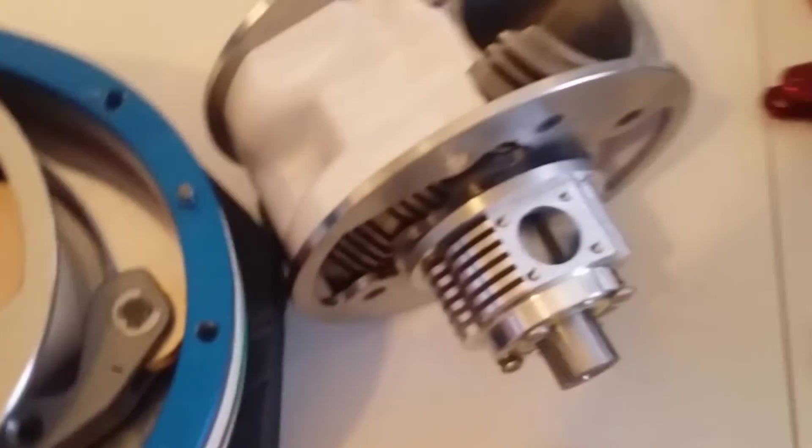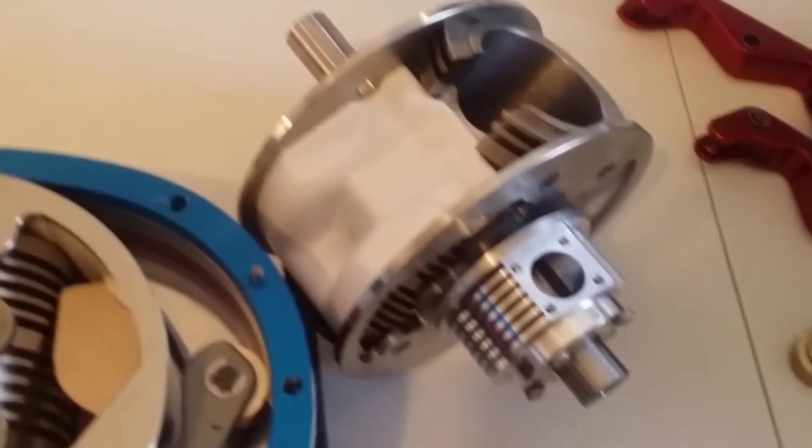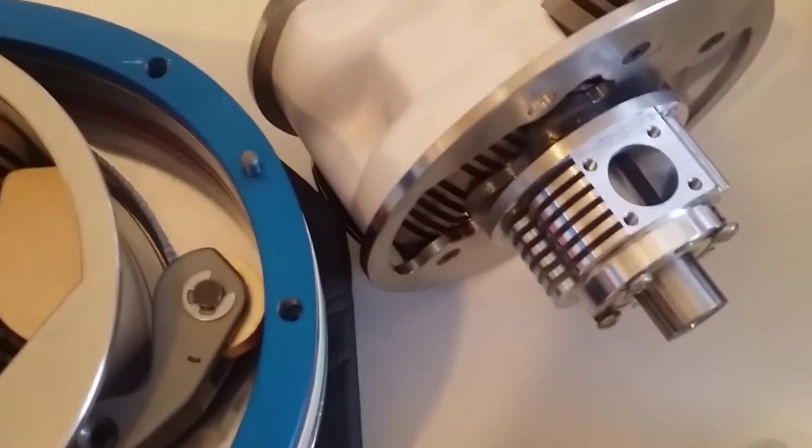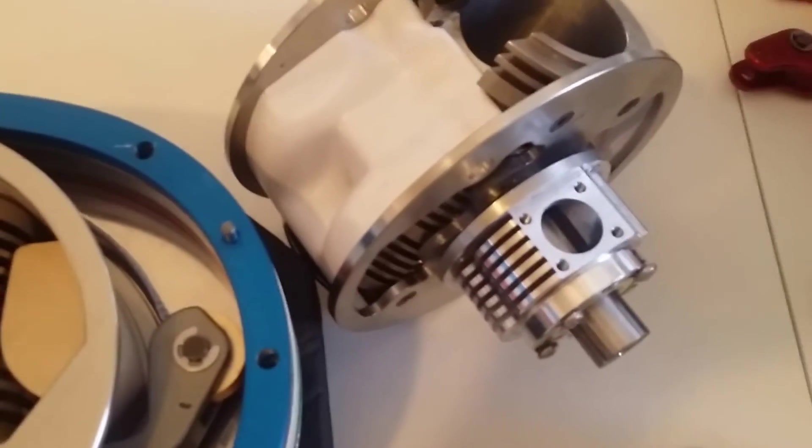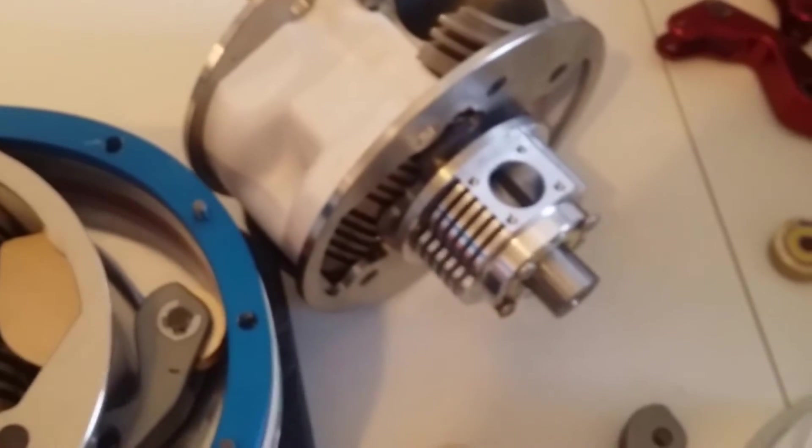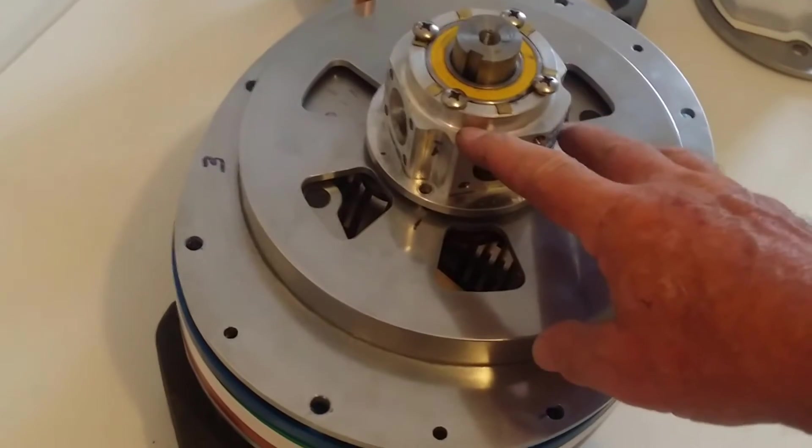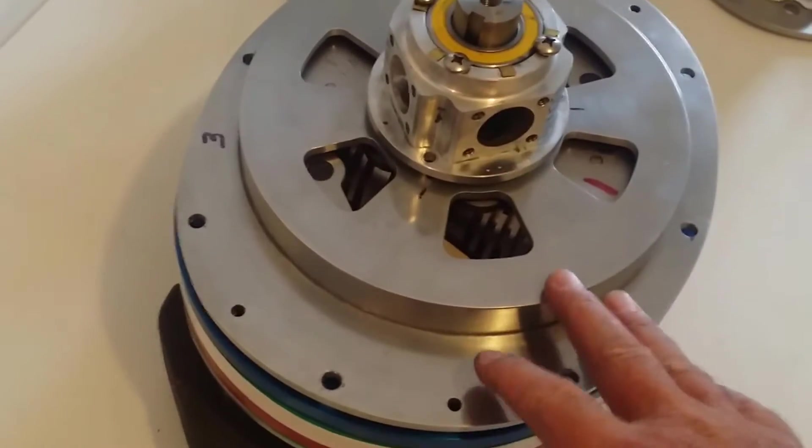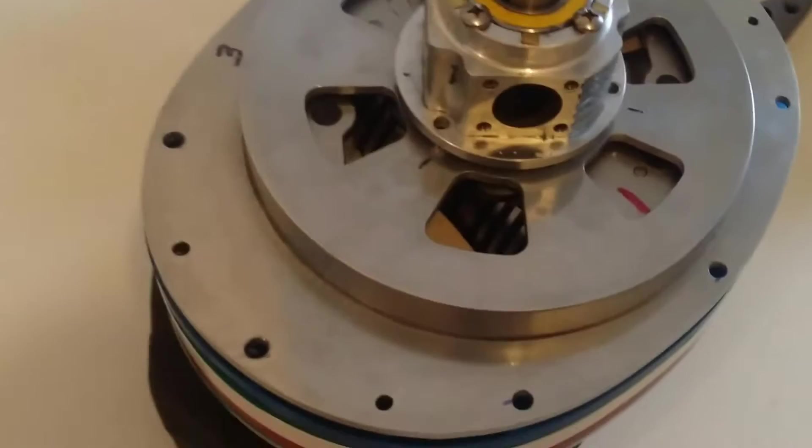Conventional engine, you couldn't do that. You've got a poppet valve and a very tense spring. This has got no valve float. It's not possible for the valves to float because it's a rotary valve. Rotary valve right here. What we're going to do is pull this off so you can see what's going on here.